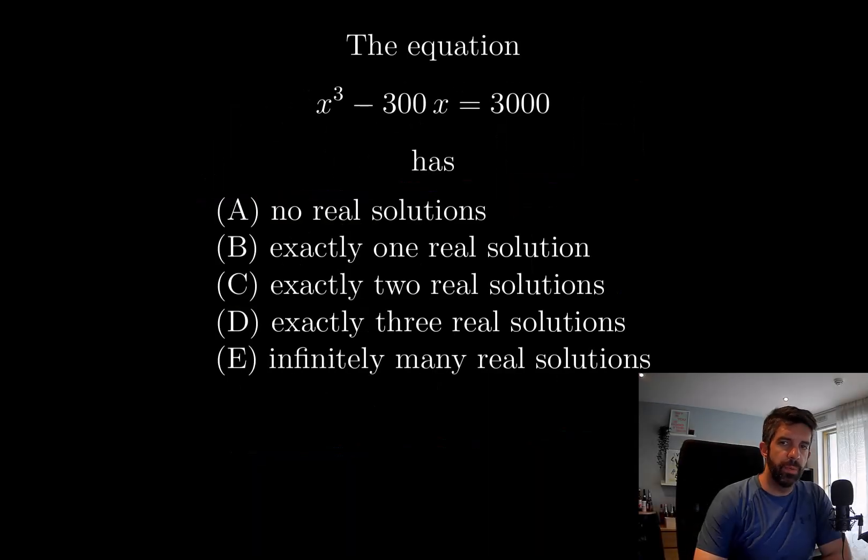The equation x cubed minus 300x equals 3,000 has no real solutions, exactly one, exactly two, exactly three, or infinitely many real solutions.